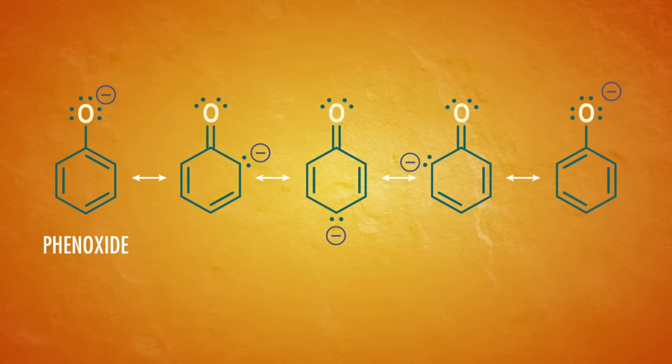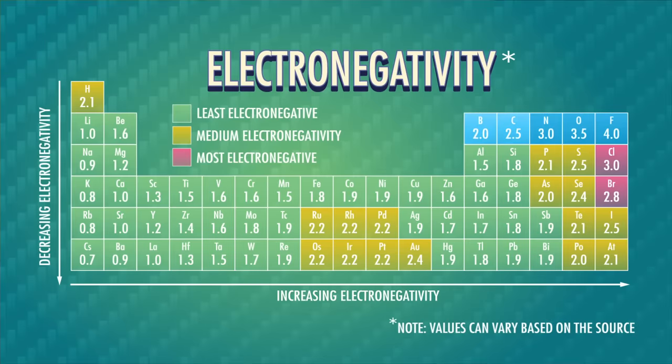Resonant stabilization is one of four major factors that help us understand the role of pKa in our reactions. Another key is the atom that loses the proton. Within a row on the periodic table, more electronegative elements stabilize negative charge better, and within a group, larger elements form more stable conjugate bases.